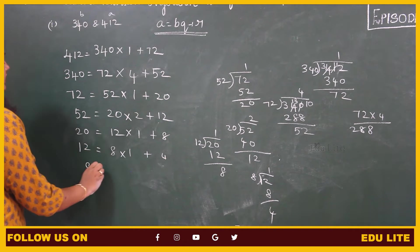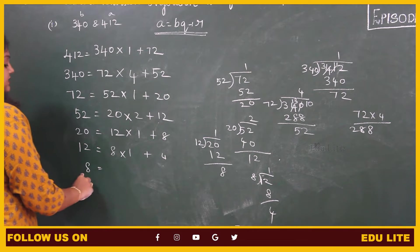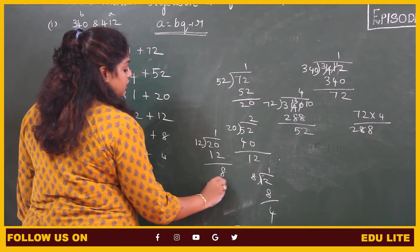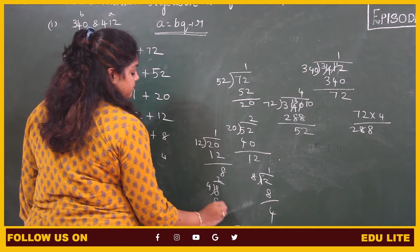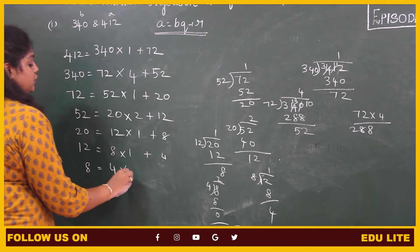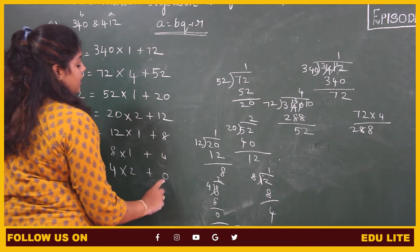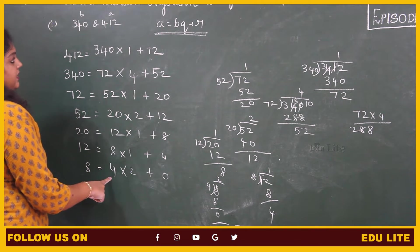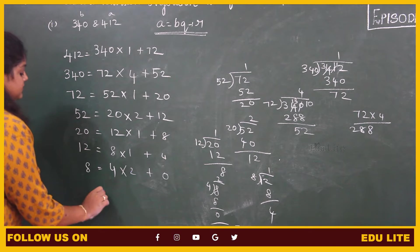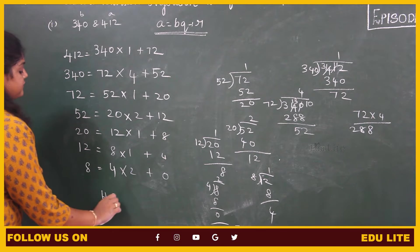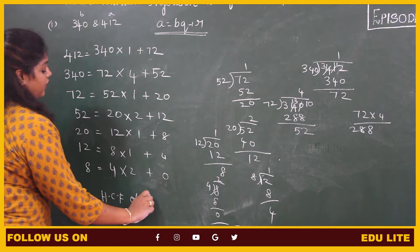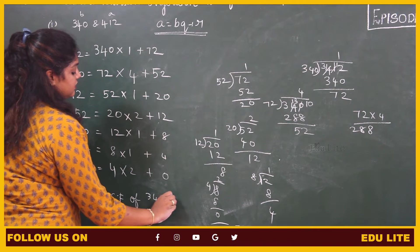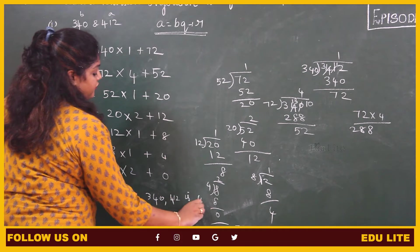The remainder is not 0, we have to proceed. The dividend is 8 and the divisor is 4. 8 divided by 4: 2 times. So 4 into 2 plus 0. When we get the remainder as 0, the divisor will be the HCF of the given numbers. So HCF of 340 and 412 is 4.